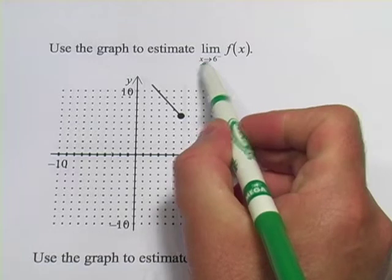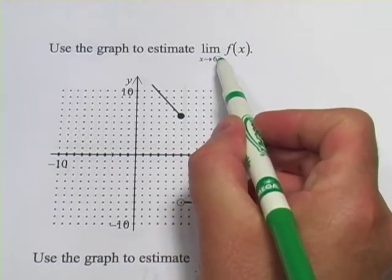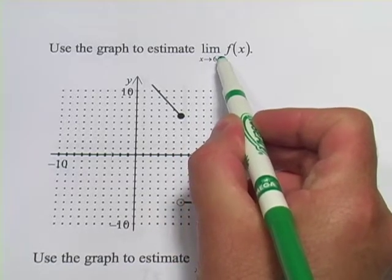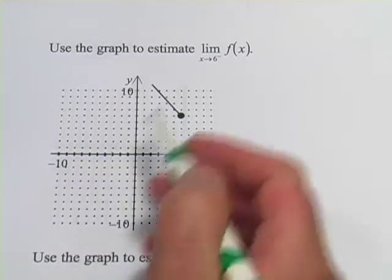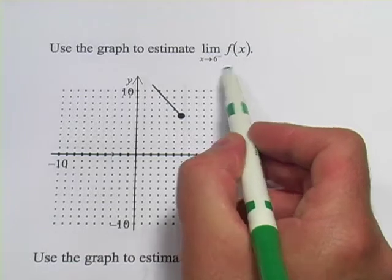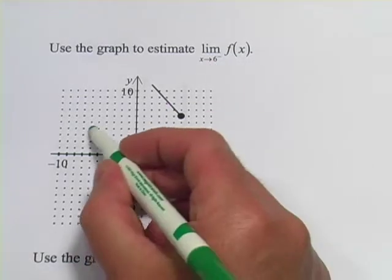The notation here, in this one it says the limit as x approaches 6, and then there's that little minus sign up here. That means from the left, from the negative part of the graph. So, what value is the function approaching as x approaches 6 from this direction?